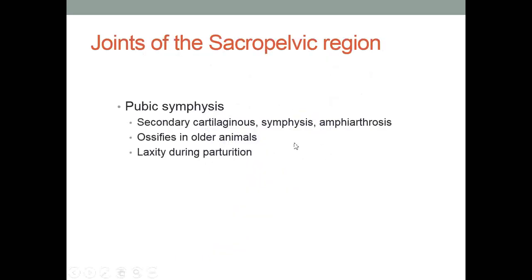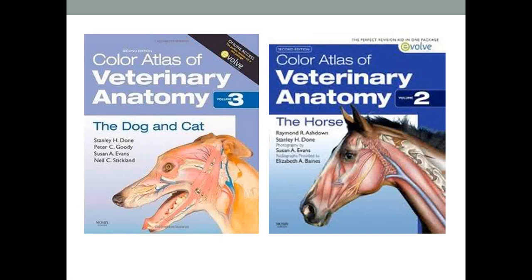The pubic symphysis is a secondary cartilaginous joint, similar to the intervertebral joint, and also sometimes ossifies in older animals. In a bitch about to whelp or a mare about to foal, be aware of increased laxity of all the pelvic joints due to hormonal release preparing for parturition — some of those joints will be hypermobile. For chiropractors wanting good pictorial references, two recommended books are the Color Atlas of Veterinary Anatomy for Dog and Cat and the Color Atlas of Veterinary Anatomy for the Horse, both by Mosby.